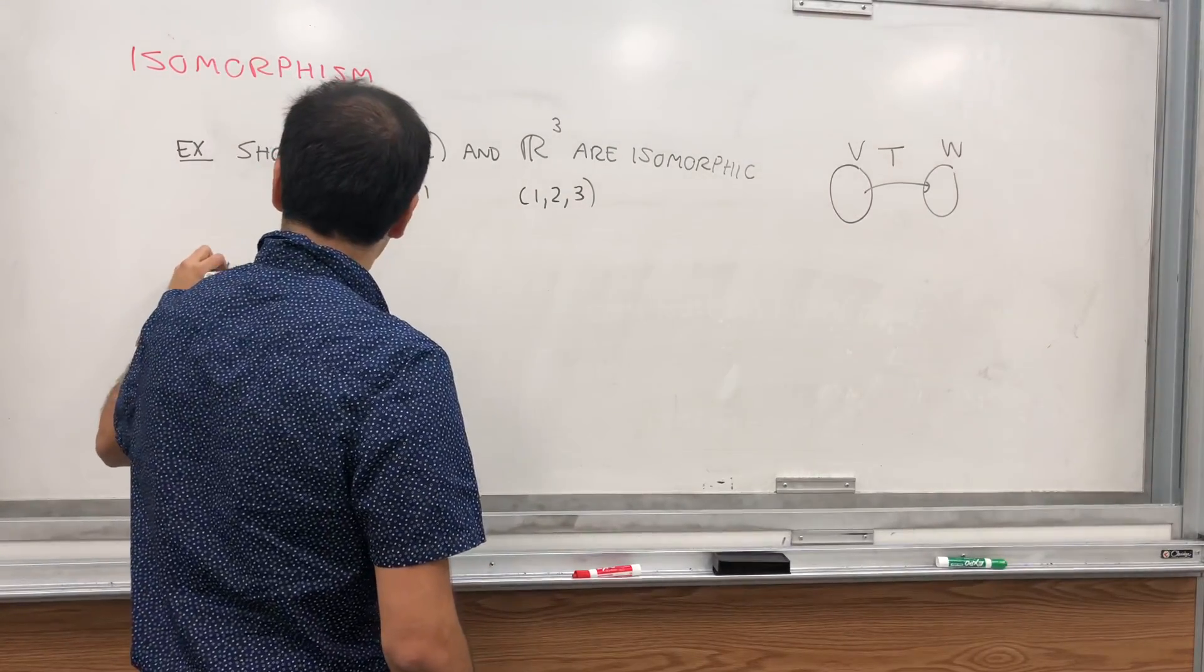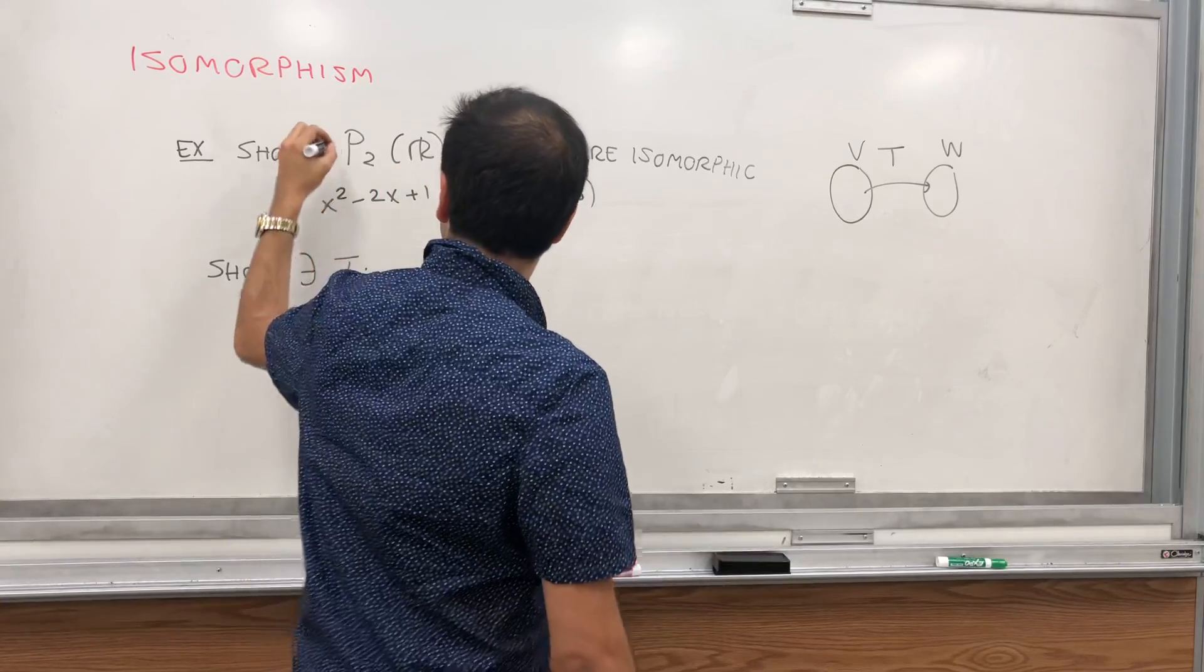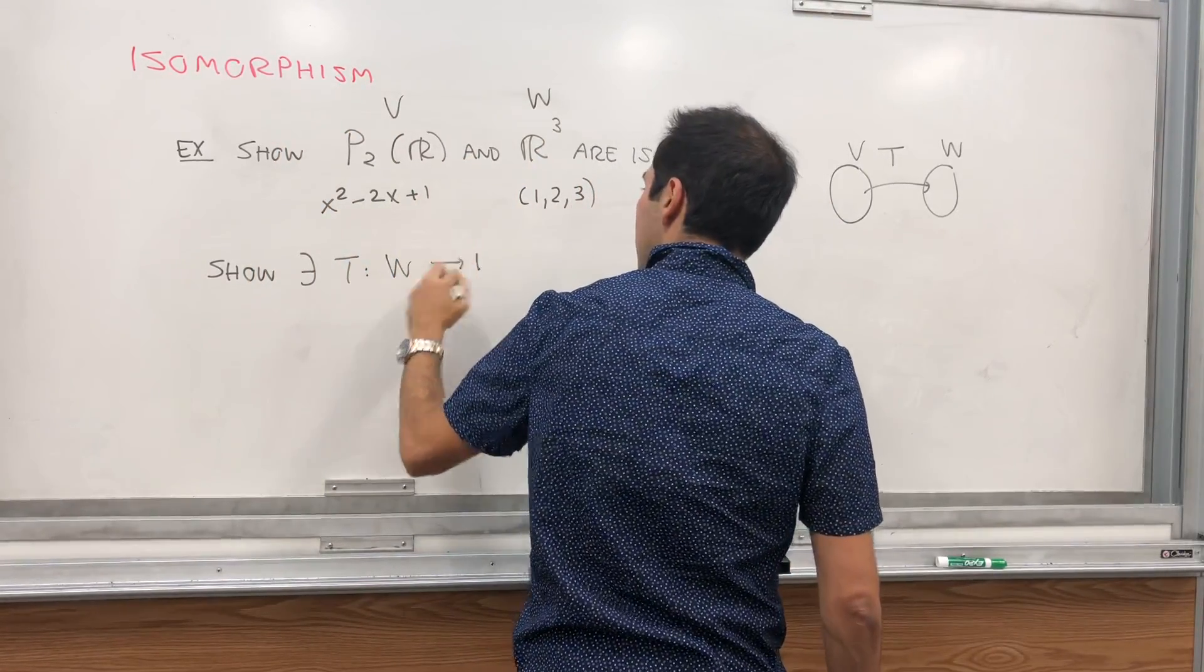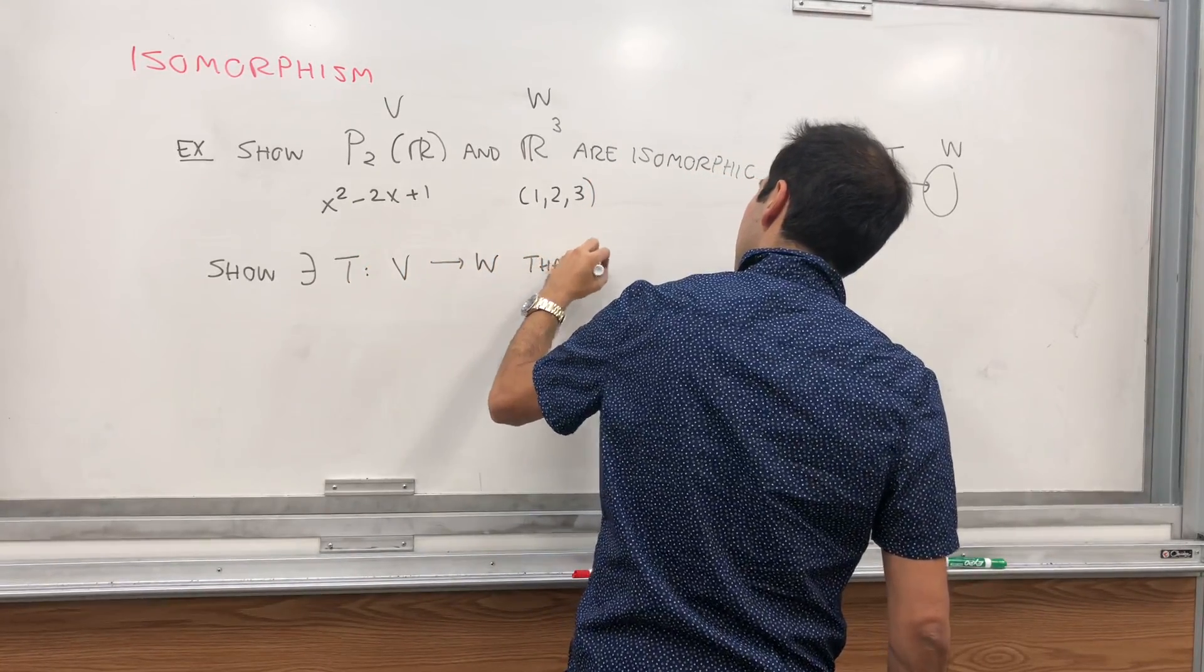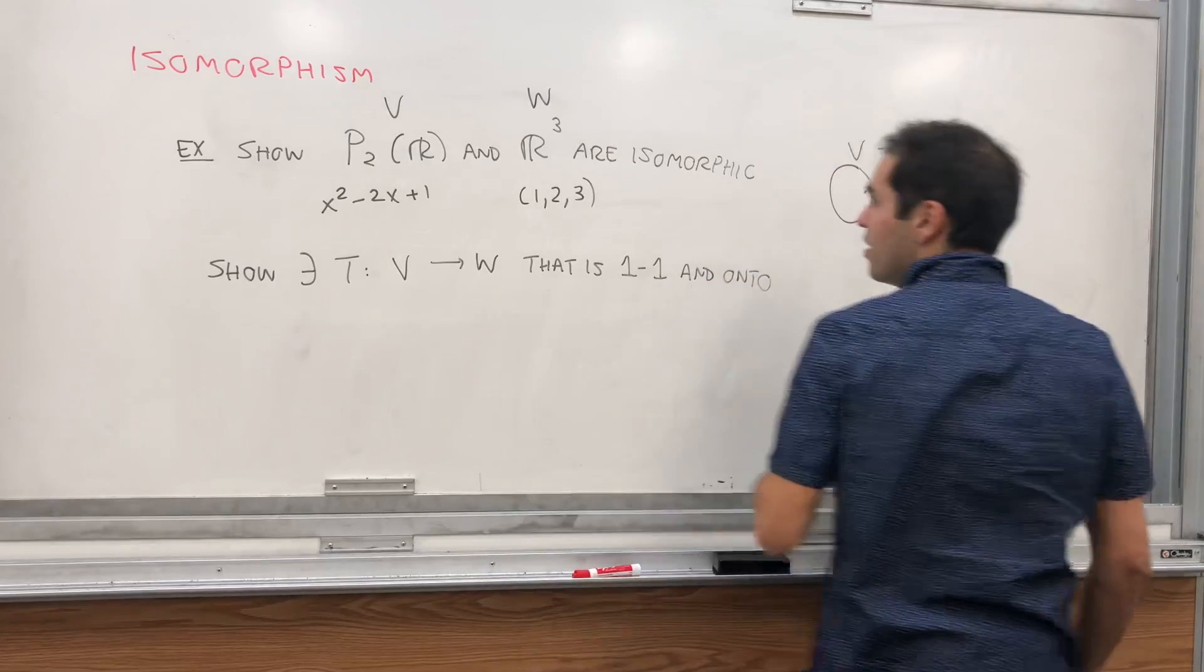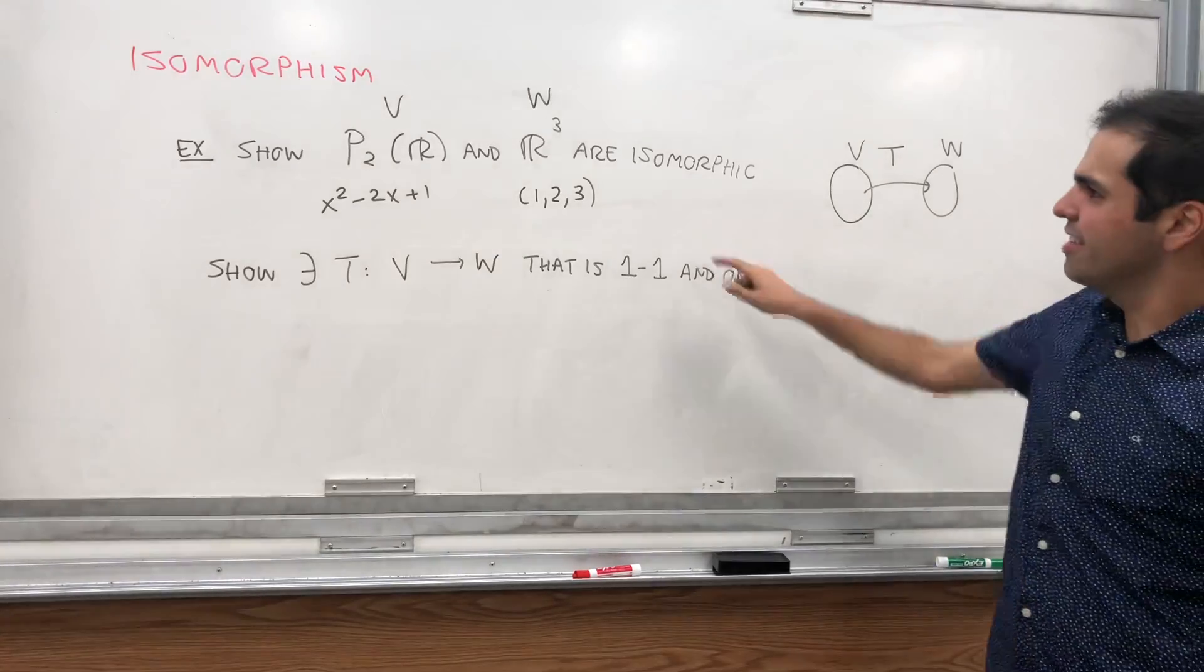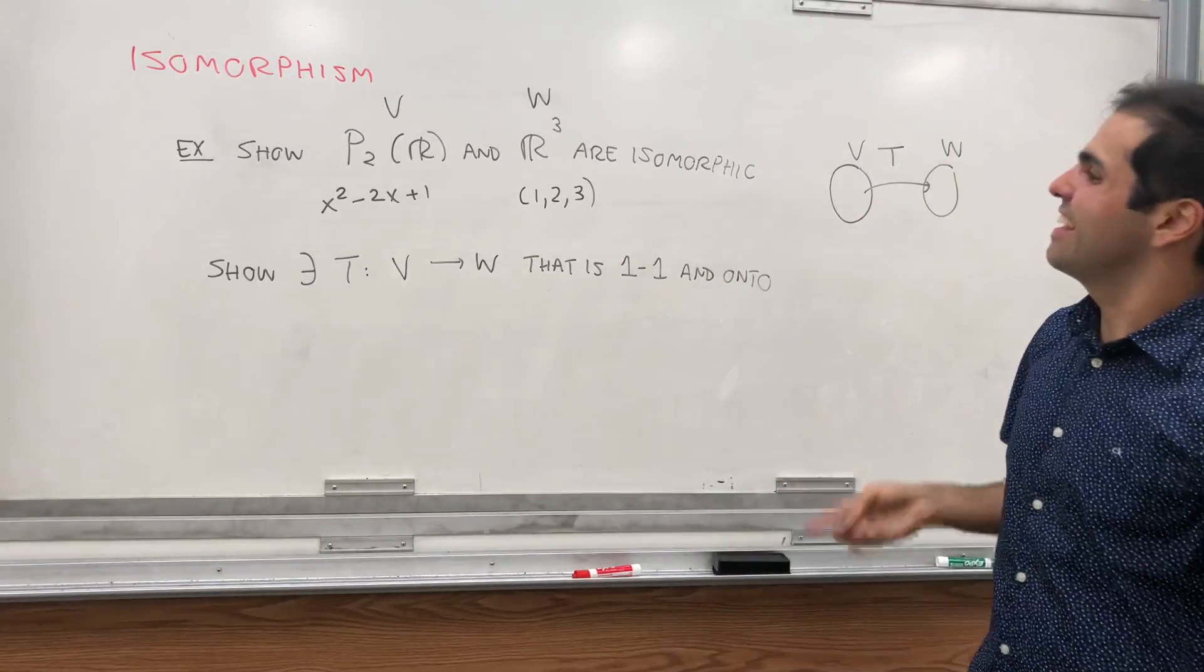So show there exists T from V to W that is one-to-one and onto. And I'll show you later if you want the technique with inverses, but I think this is more important. And I'll also show you a really amazing way at the end.